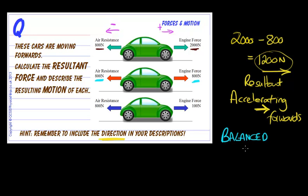That means the resultant force, balanced forces. That means the resultant force, well it's going to be zero. Resultant equals zero because 800 minus 800 is zero. So that means we're not going to be accelerating, so no acceleration.